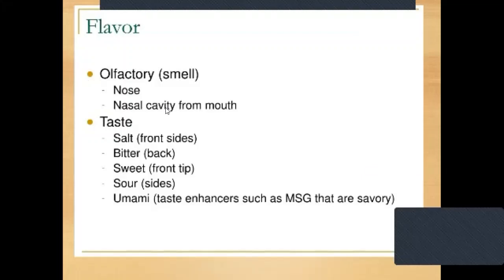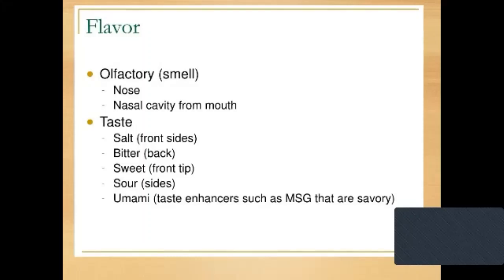Flavor is a combination of smell and taste. In olfactory, or smell, we study how the food product smells, carried out by the nose or nasal cavity from the mouth. Taste has five types: salty taste present on the front side of the tongue; bitter taste at the back side of the tongue; sweet taste at the front of the tongue; sour taste on both sides of the tongue; and umami, which is a taste enhancer such as MSG and savory.